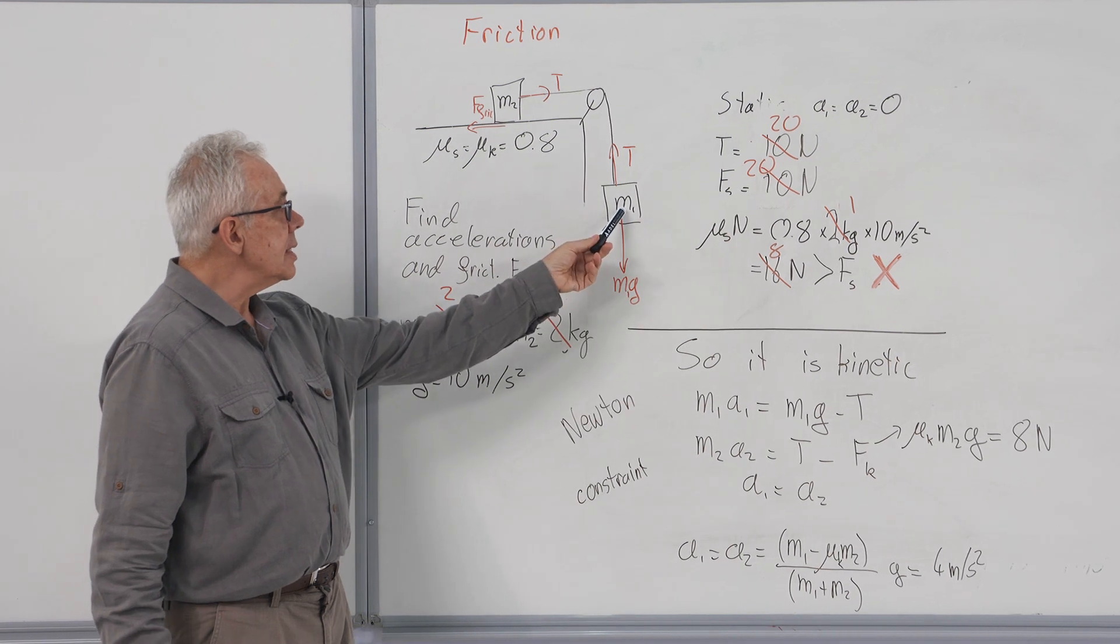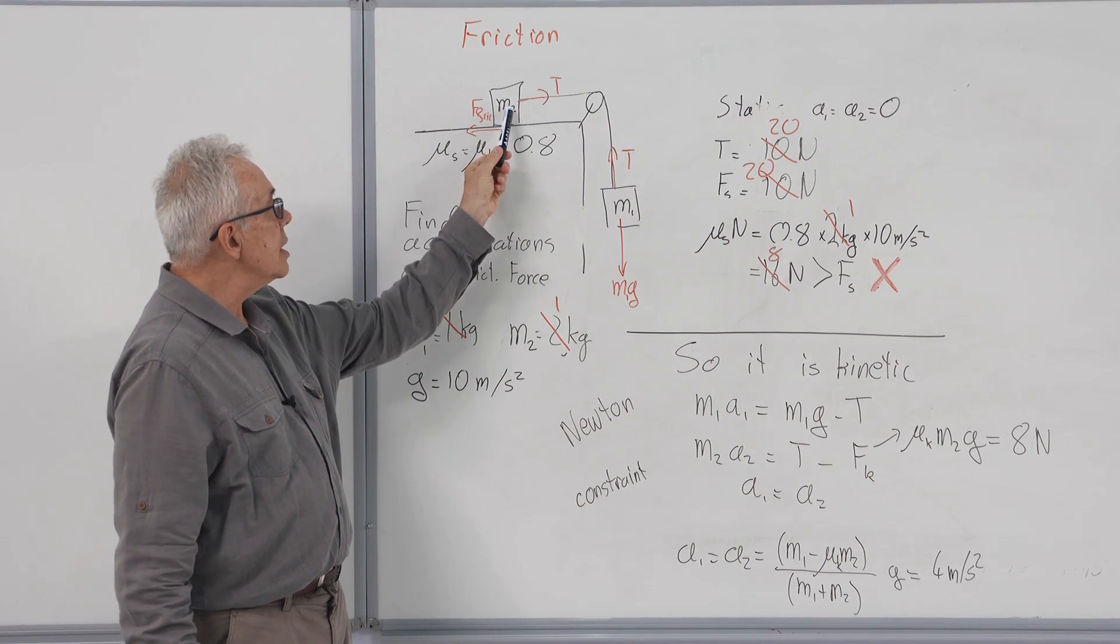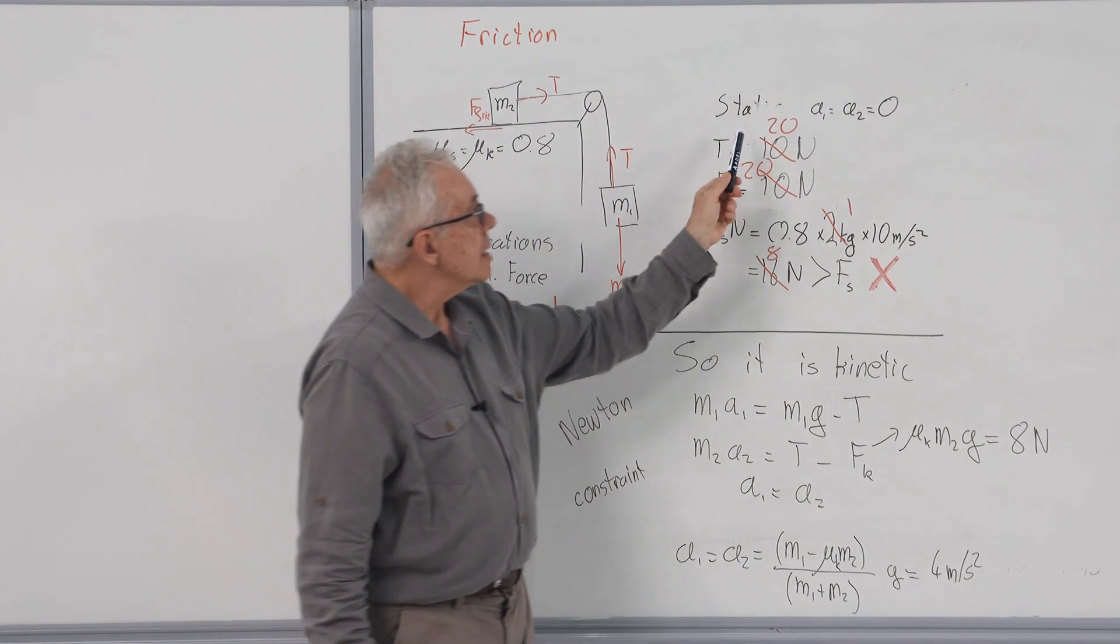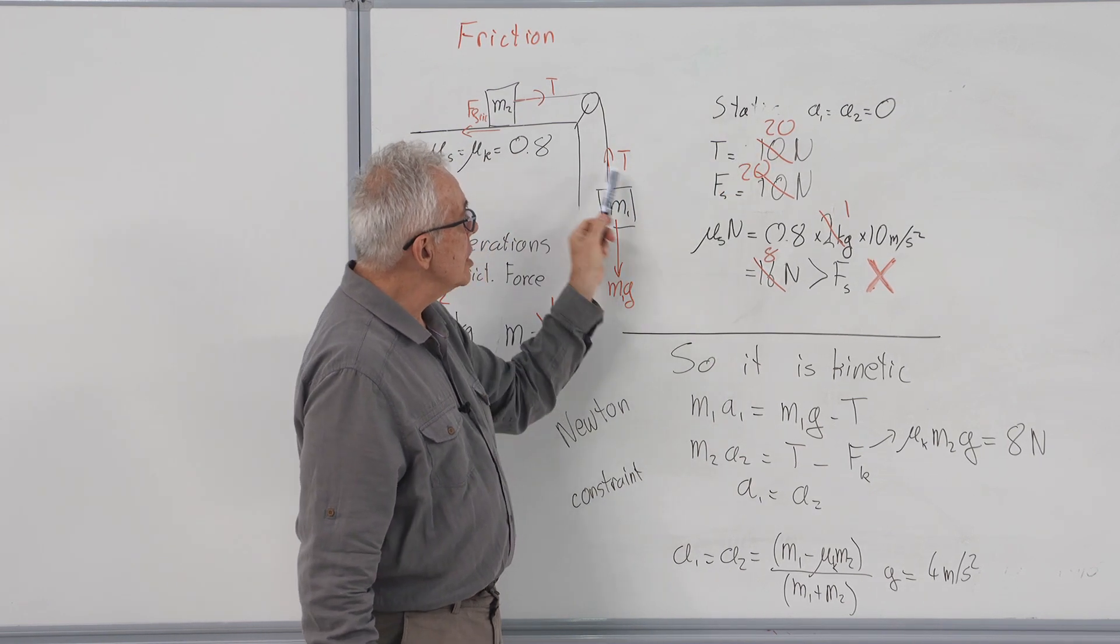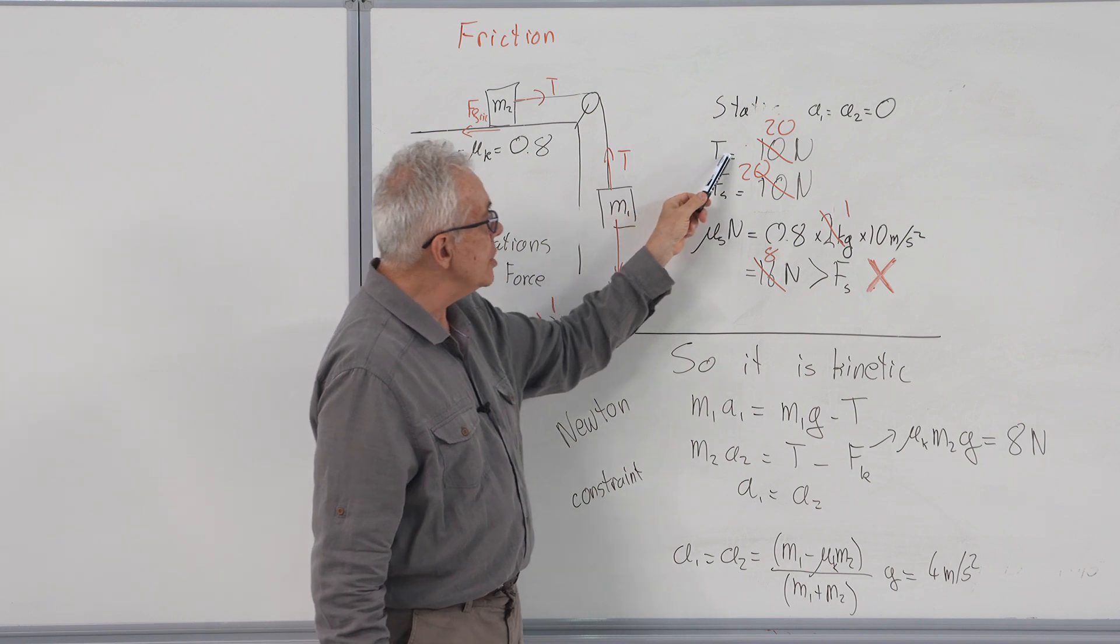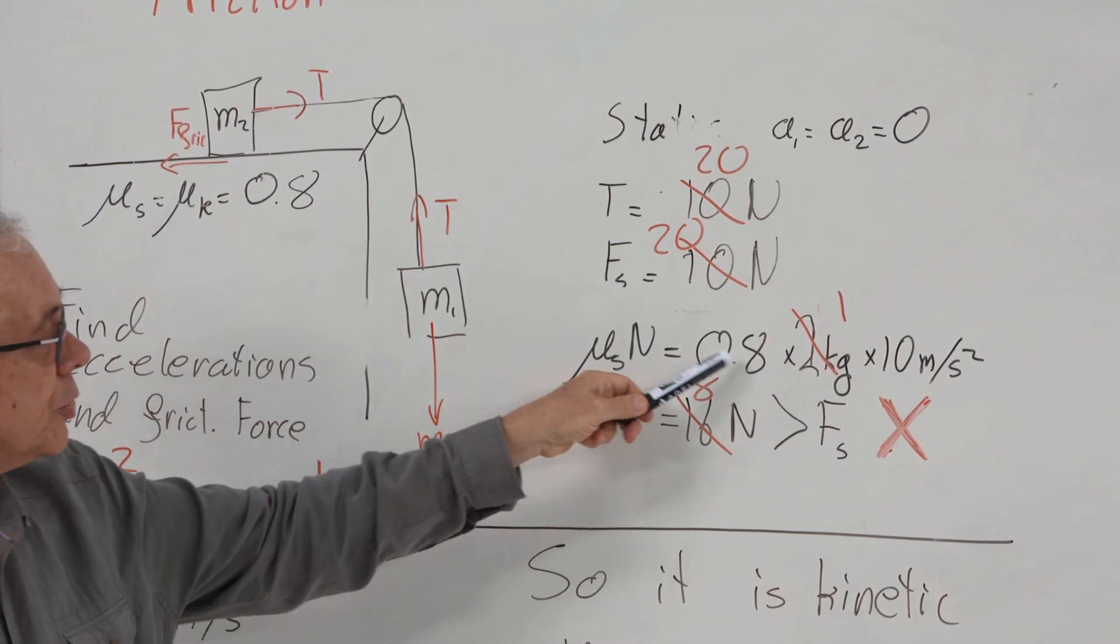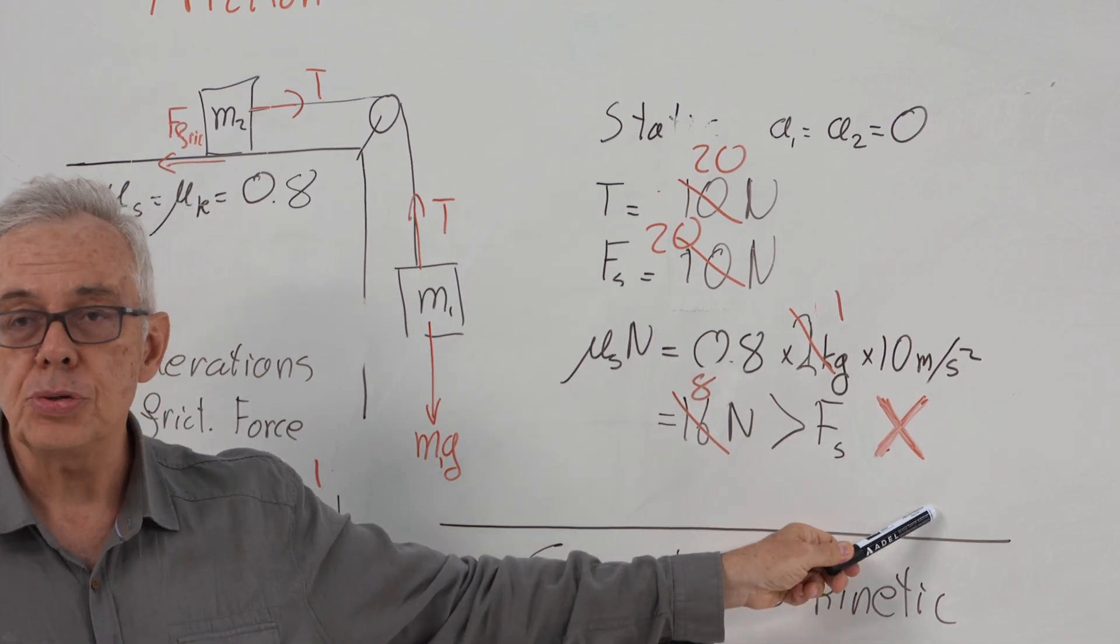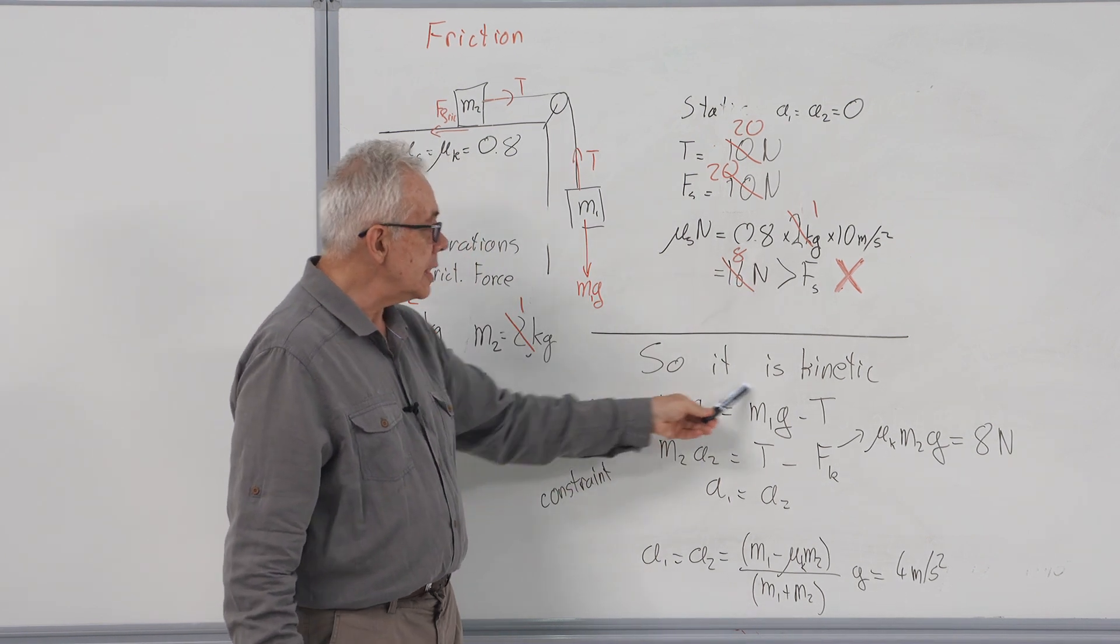If on the other hand the hanging mass is 2 kilograms and the mass on the table is 1 kilogram, then the tension would be 20 newtons. Static frictional force would also be 20 newtons, but the maximum static frictional force would be mu times normal 8 newtons. This cannot be true because it violates our condition. So it is kinetic.